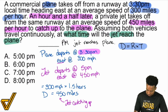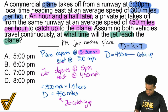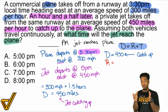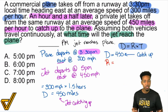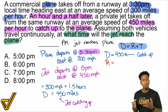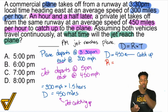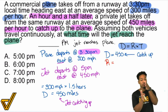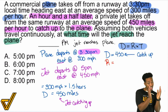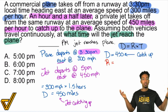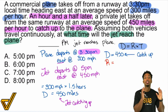We know the catch-up distance is 450 miles. Now, what's the catch-up rate? The rate is going to be — think about it like this: the plane is traveling at 300 and the jet is traveling at 450. The difference is 150. For every hour, the plane travels 300 and the jet travels 450. So everything they travel together cancels out. If the plane moves 300 and the jet moves 450, there's that gap of 150. That's the catch-up rate.